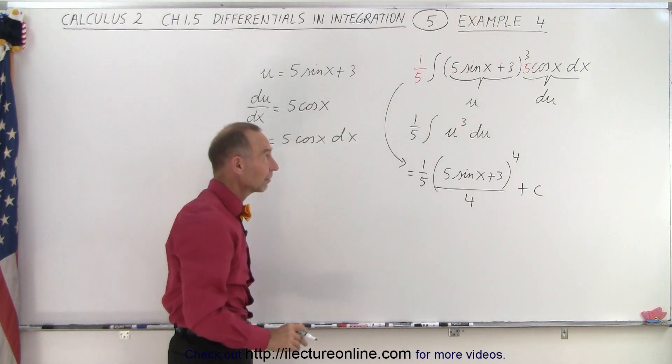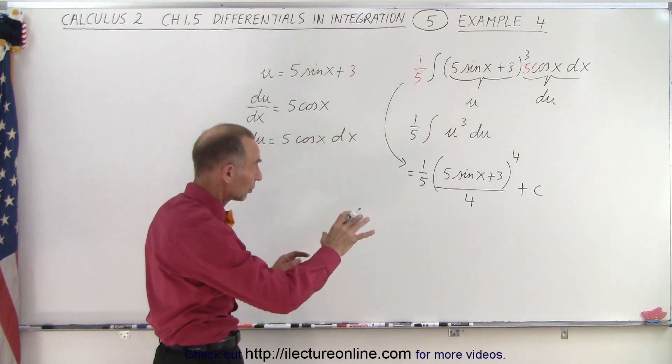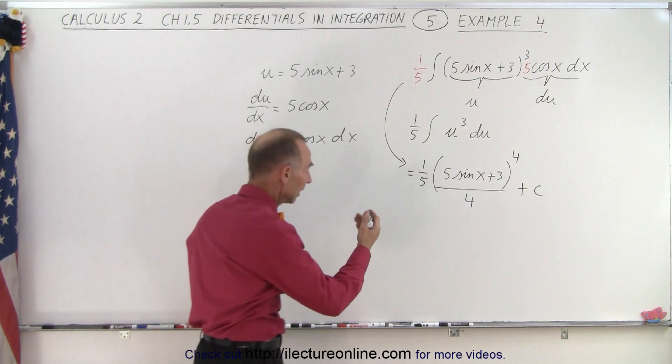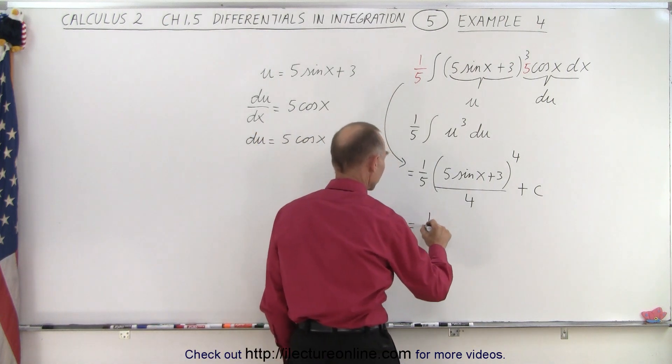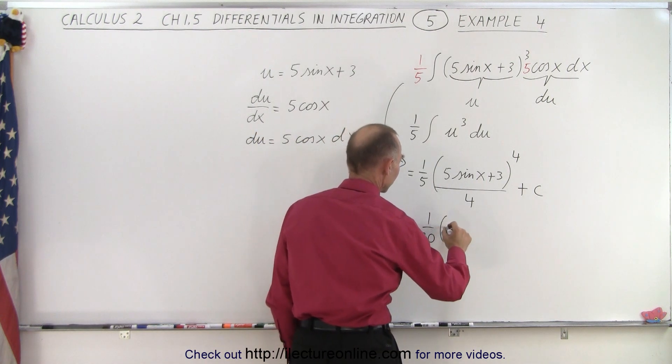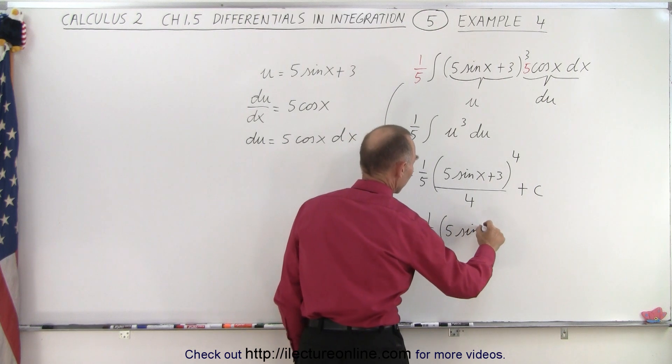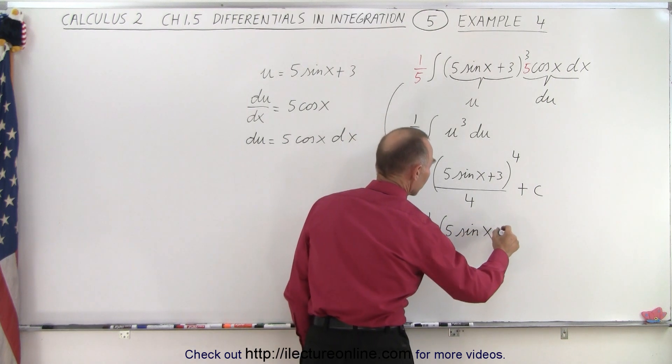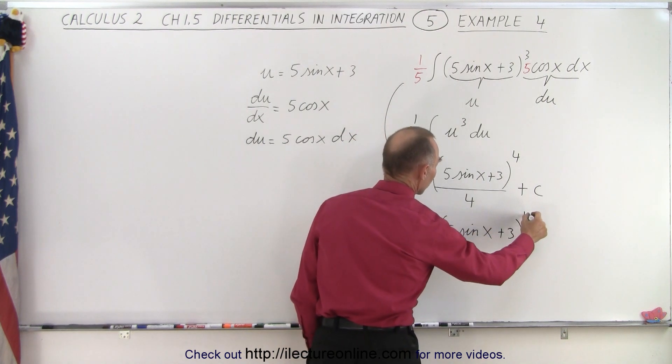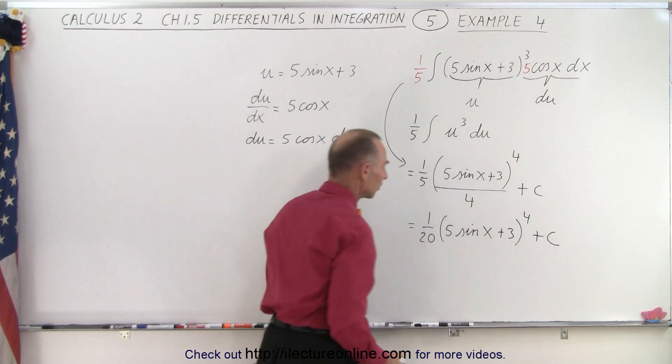It's necessary for the integration, but you don't carry it through. That's the part that drops off. And then if you want to rewrite this, this can be written as 1 twentieth times 5 sine of x plus 3 to the 4th power plus a constant of integration.